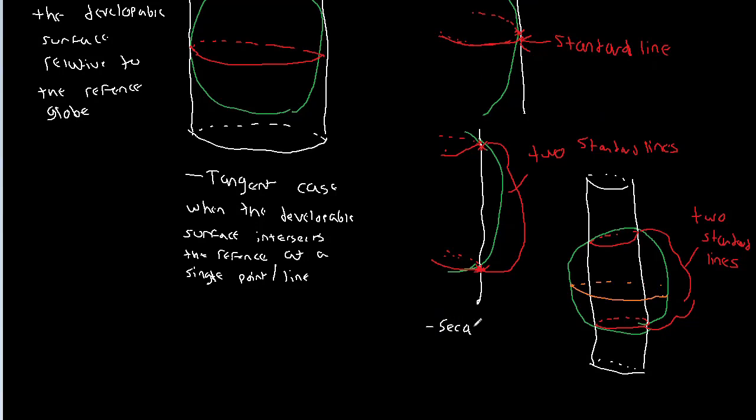So when we have two standard lines we call this the secant case. The secant case. The developable surface intersects the reference globe at two points, or put another way it creates two lines. So this is really important. We're going to come back to this idea of tangent versus secant in the next video when we talk about distortion.